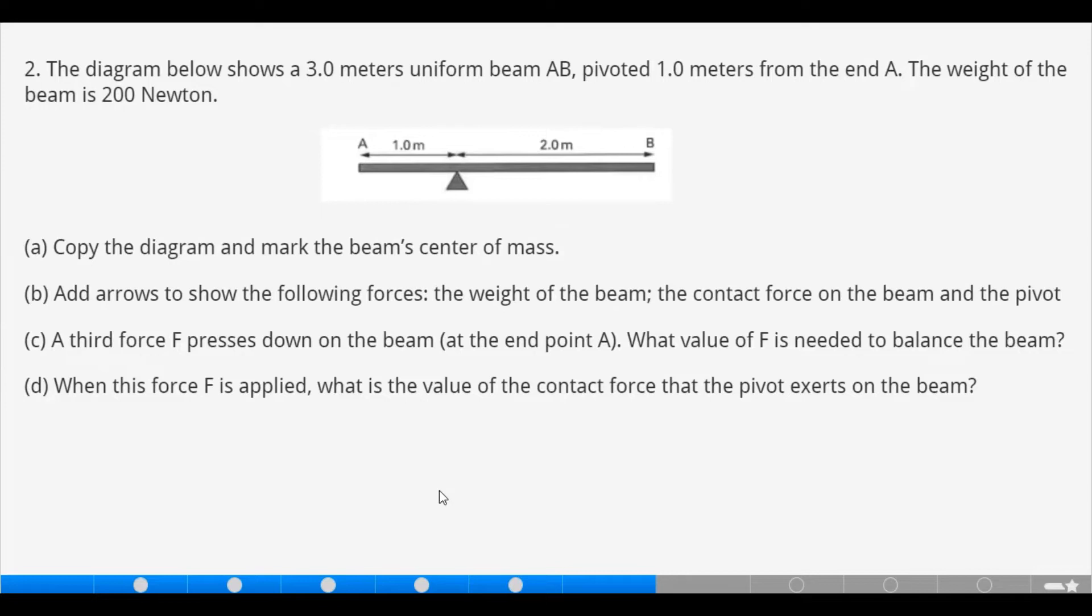Question 2. The diagram below shows a 3.0 meters uniform beam, pivoted 1.0 meters from the end A. The weight of the beam is 200 newtons. A: You have to copy the diagram and mark the beam's center of mass. B: Add arrows to show the following forces: the weight of the beam, the contact force on the beam and the pivot. C: A third force F presses down on the beam at the end point A. What value of F is needed to balance the beam? D: When this force F is applied, what is the value of the contact force that the pivot exerts on the beam?